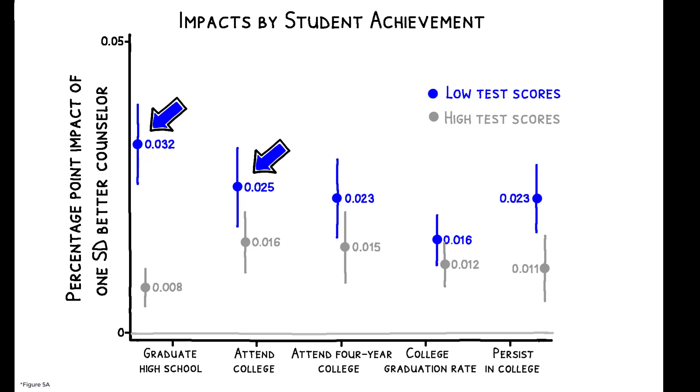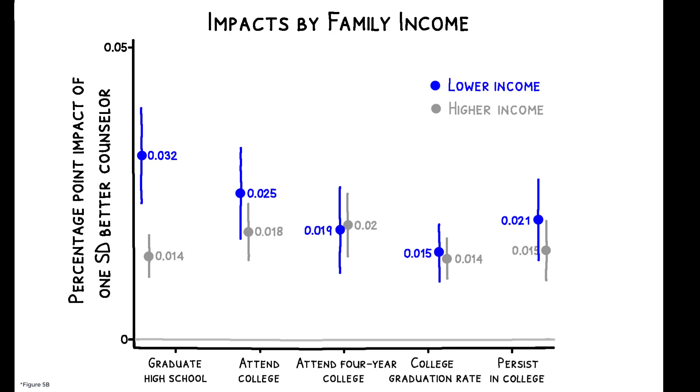the analogous numbers for high-achieving students are only 0.8 and 1.6 percentage points respectively. Counselors also matter more for low-income students' high school graduation.